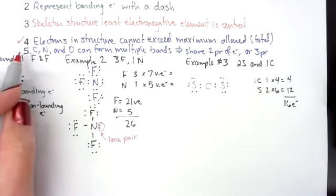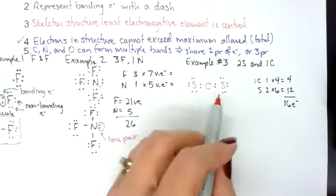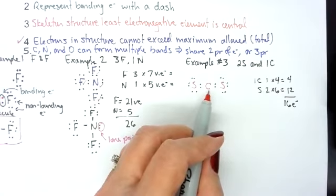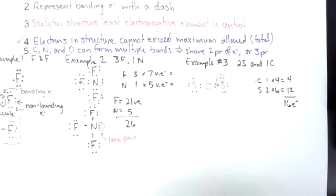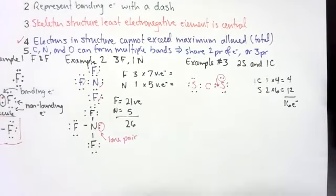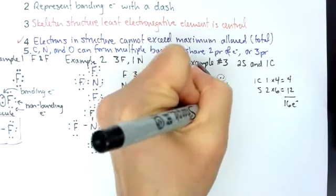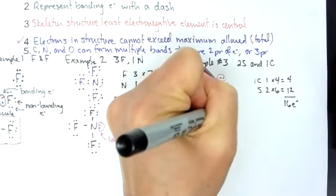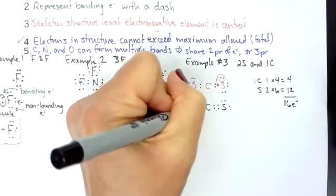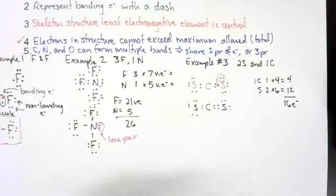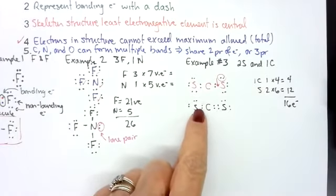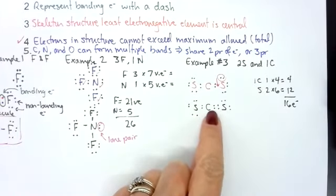Well, this is where rule number five comes in, where carbon, nitrogen and oxygen can form multiple bonds. So what carbon is going to do, think of that central atom as kind of being an electron cowboy. It's going to throw up a lasso and it's going to pull more electrons down to share more electrons. So now we've got carbon and it's going to have two pairs of electrons between it, and then we've got sulfur. And over here I've got sulfur.